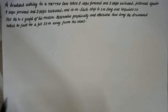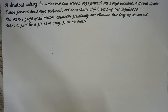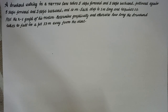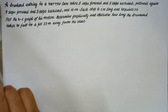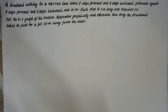According to this question, a person who has drunk takes 5 steps forward and 3 steps backward. Every step takes 1 second. Now we are going to use a displacement versus time graph to analyze the motion. We need to determine how long the person takes to fall in a pit 13 meters away from the start.